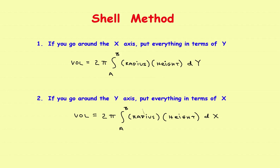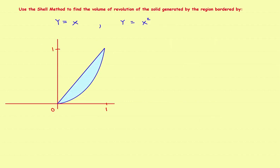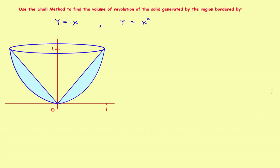In the first example, we're going to take two functions around the y-axis, so we'll put everything in terms of x. Suppose we had this: use the shell method to find the volume of revolution of the solid generated by the region bordered by y equals x — the straight line on top — and y equals x squared, the parabola on the bottom. They intersect at the point (1, 1). This defines the area you're going to revolve around the axis, and rotating it sweeps out the shaded volume we want to find.